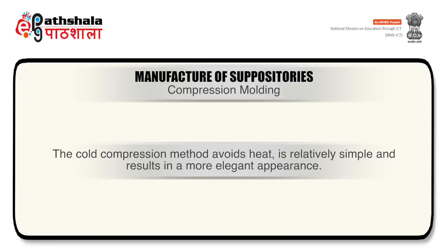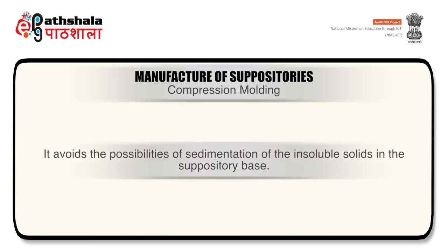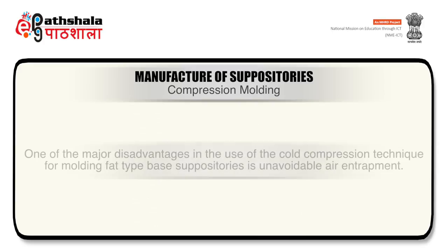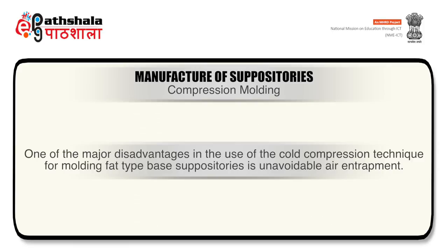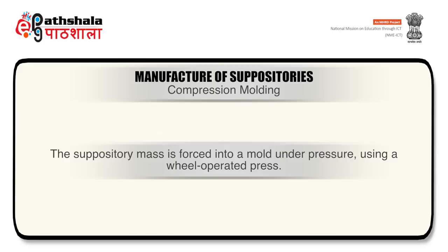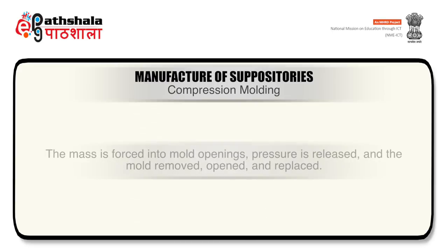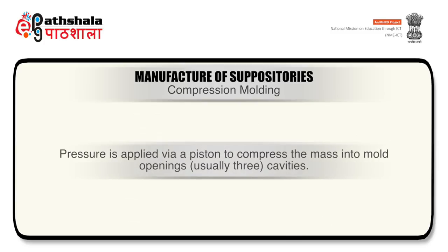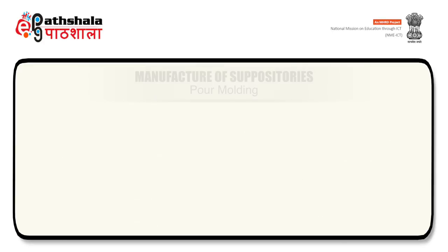Active ingredients are usually finely powdered or dissolved in water, or sometimes mixed with a small amount of wool fat to help incorporation with the suppository base. The mass is rolled into a cylindrical rod of desired length and diameter, or into vaginal balls of intended weight. Starch or talcum powder on the rolling surface prevents the mass from adhering. The rod is cut into portions and one end is pointed. The second method is compression moulding, which avoids heat, is relatively simple, and results in more elegant appearance. It avoids the possibilities of sedimentation of insoluble solids in the suppository base. A major disadvantage is unavoidable air entrapment, which makes close weight control impossible and favours possible oxidation. The suppository mass is forced into a mould under pressure using a wheel-operated press.